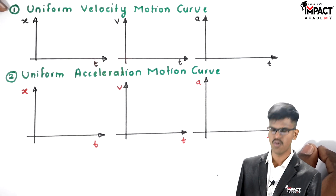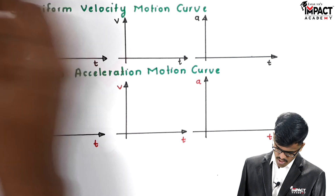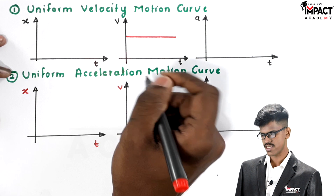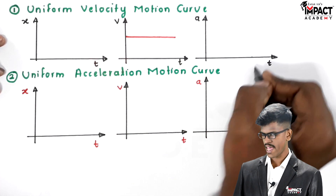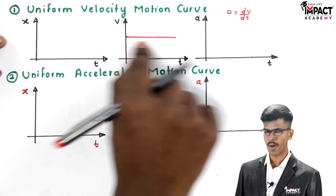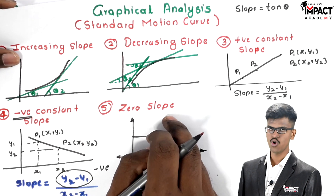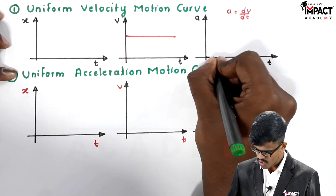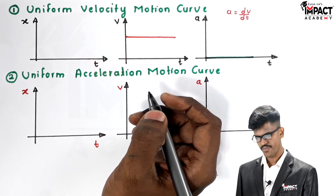Our first motion curve is for uniform velocity motion. In uniform velocity motion, the velocity of the particle is constant, so the velocity-time graph will be a straight line parallel to the x-axis. Since the velocity is constant, if we find acceleration — acceleration is dv/dt, meaning the slope of the v-t curve — and for a line parallel to the x-axis the slope is always zero, a particle having uniform velocity has zero acceleration. This is consistent with what we expect.